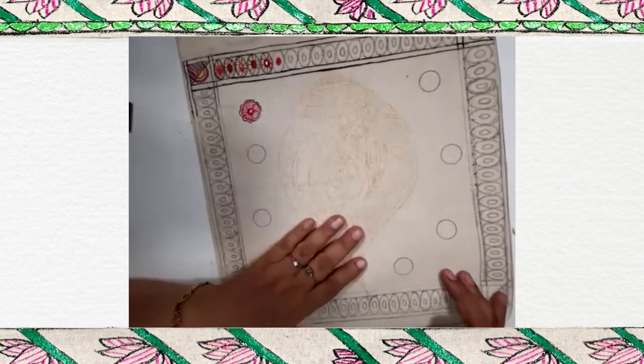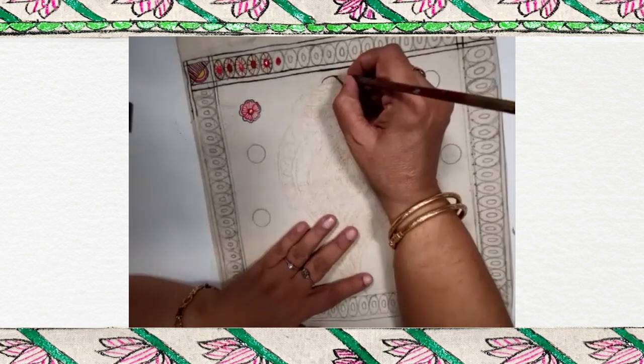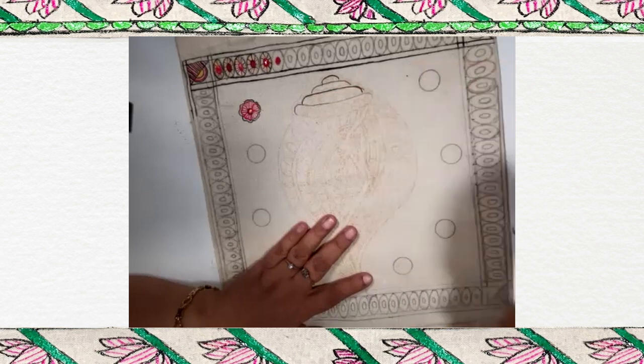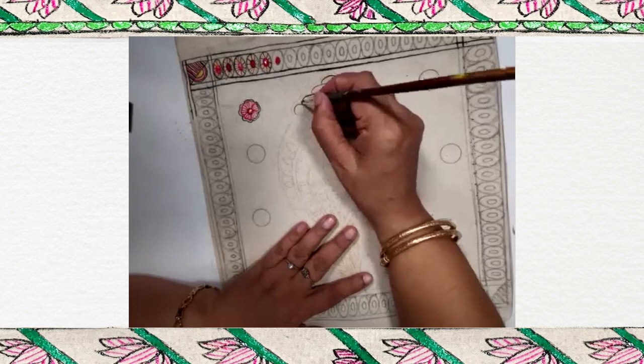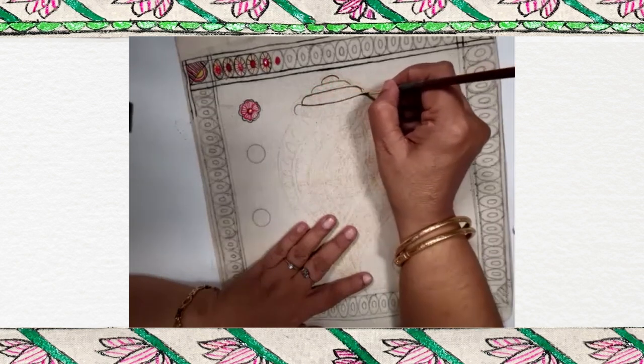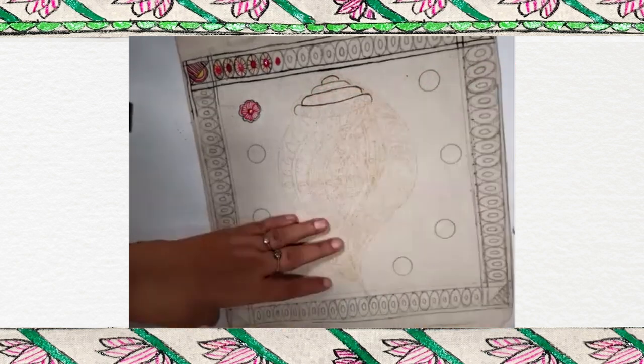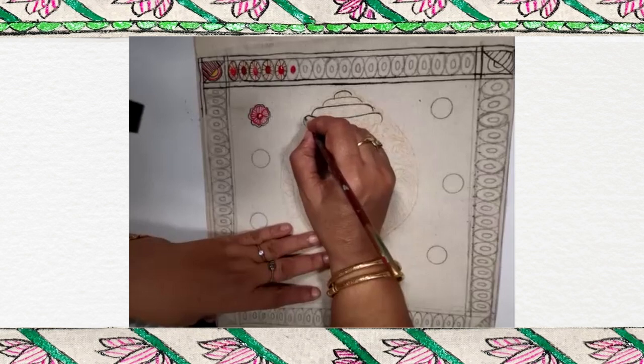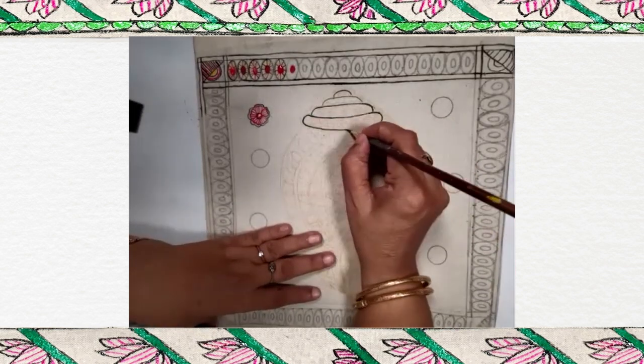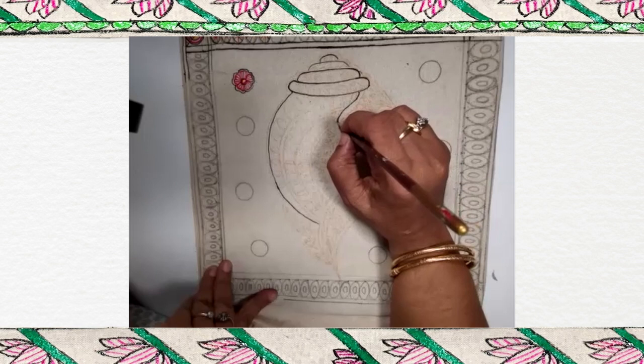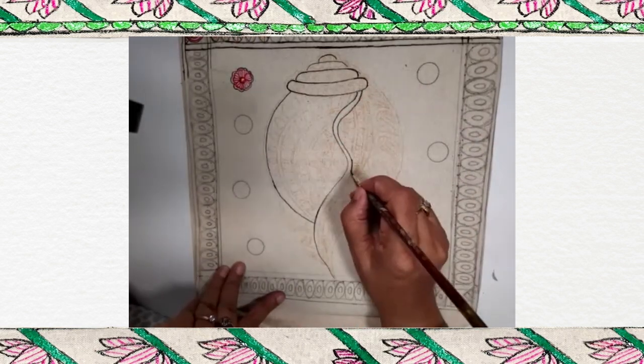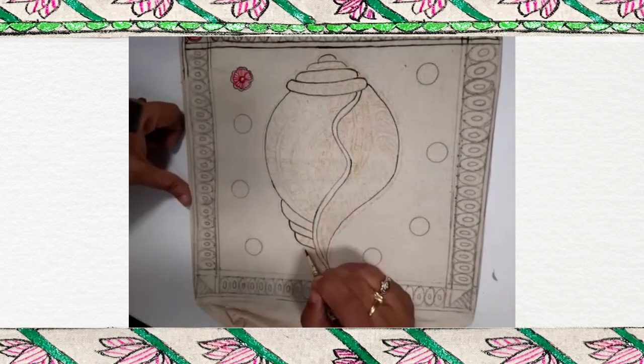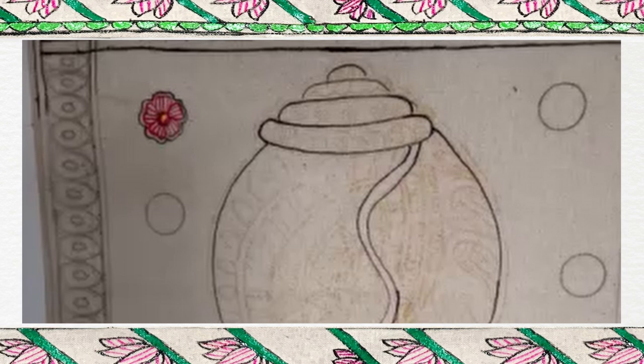So first let us draw the outline of the conch. I have drawn it on a piece of paper and then I traced it with the yellow carbon. Why I drew separately so that all the erasing work can be done on that paper.